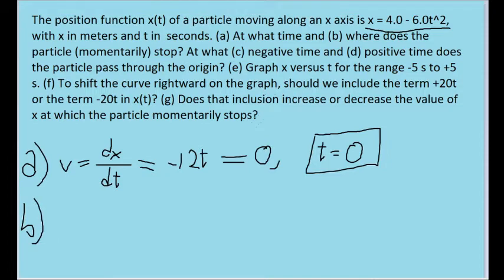Part B asks us to find the position at which the particle momentarily stops. Well, now that we have the time at which this happens, we can simply take t equals zero and plug that into our position function to find out where the particle is at that point in time.